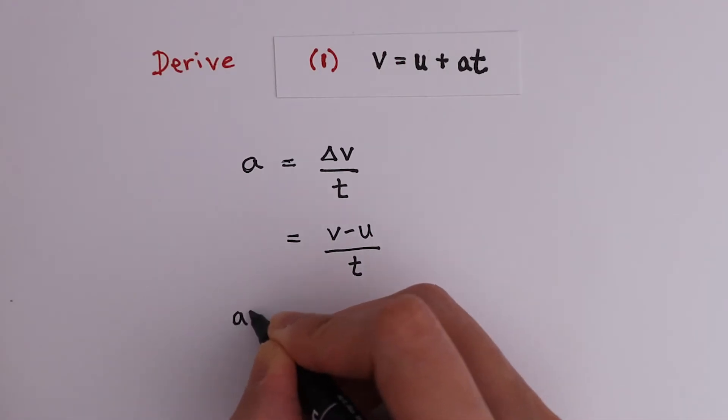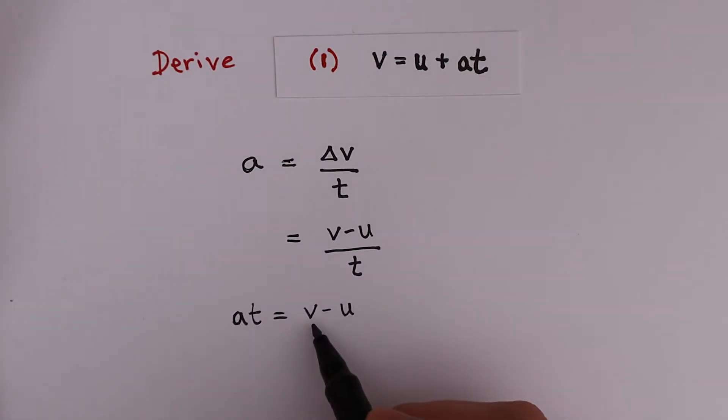Rearranging this by bringing t to this end, we get v minus u. Making v the subject, we get the equation v is u plus at.